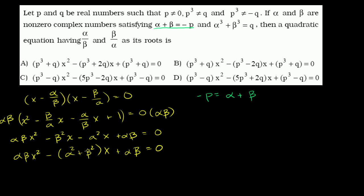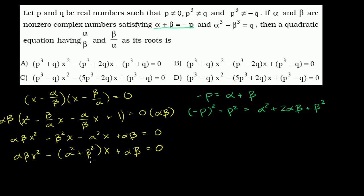So let's square both sides. Negative p squared — because the negatives cancel — is just p squared, which equals alpha squared plus 2 alpha beta plus beta squared. And already we have something interesting: we can express alpha squared plus beta squared in terms of p squared and alpha beta.